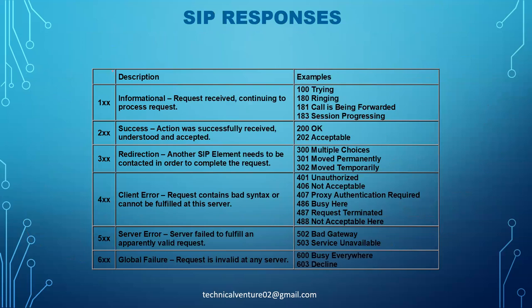SIP responses range from 1xx to 6xx. The 1xx messages are informational — they indicate that a request has been received and is continuing to be processed. Examples include 100 Trying.